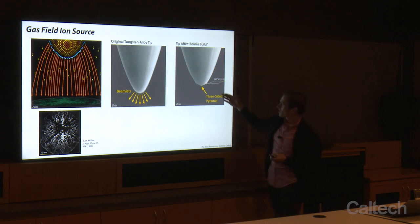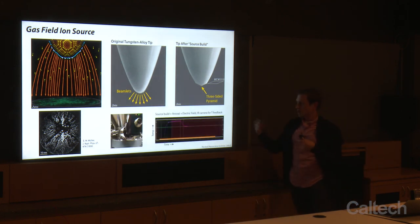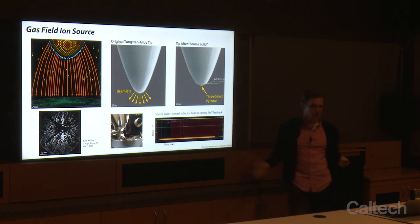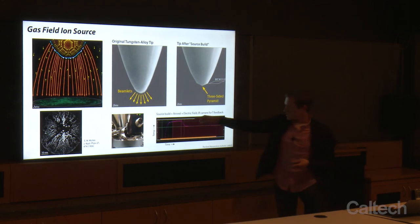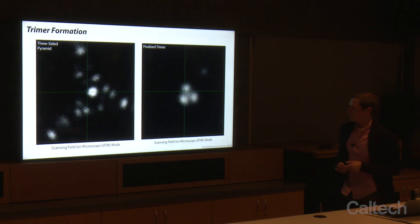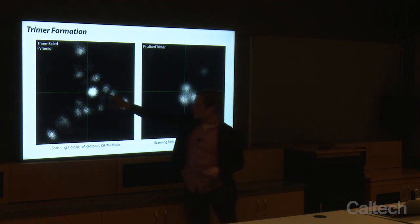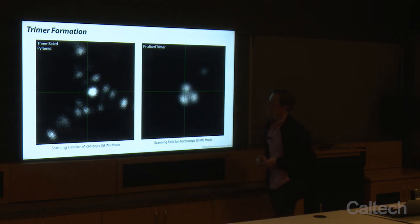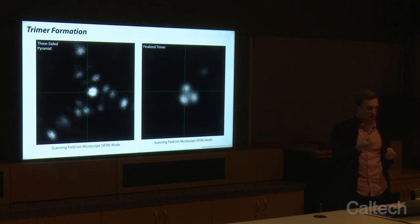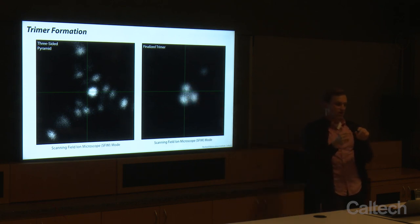We do what's called a source build, which forms a three-sided pyramid at the end of the tip by heating it and applying an electric field. The settings are controlled within the software, and you can see the temperature-time profile during the source build — it takes about 15 minutes. We monitor the tip with an infrared camera during this process. That forms a three-sided pyramid, and ultimately we want to get to a trimer — or sometimes a dimer, monomer, or single atom. After the source build, we can see the three-sided nature of that pyramid. To get from there to a trimer, we use field evaporation — increasing the extraction field until we start ripping off tungsten atoms, plane by plane, until we reach the 1-1-1 plane with three atoms stabilizing each other, each emitting a beamlet.